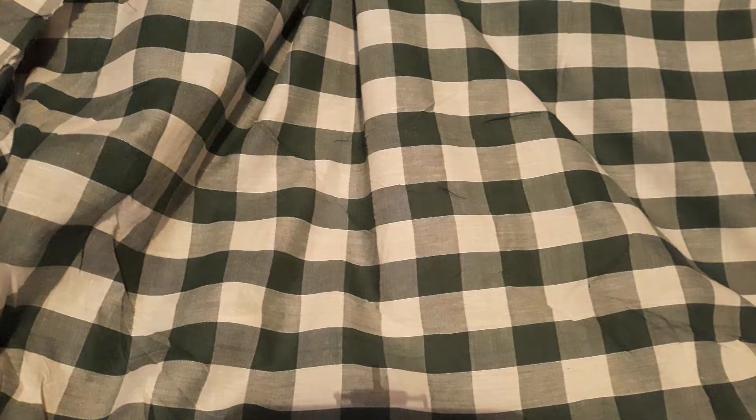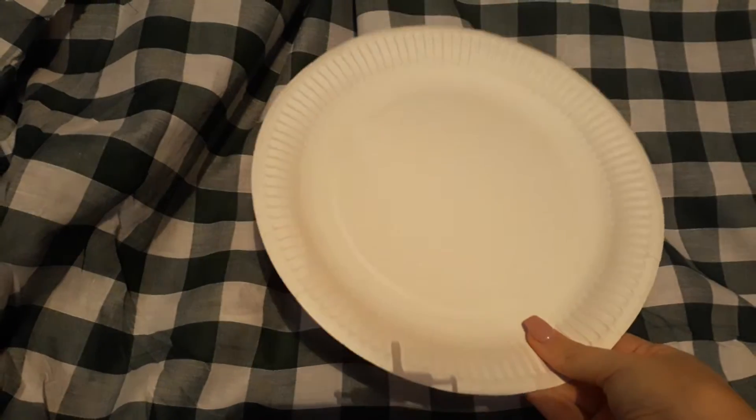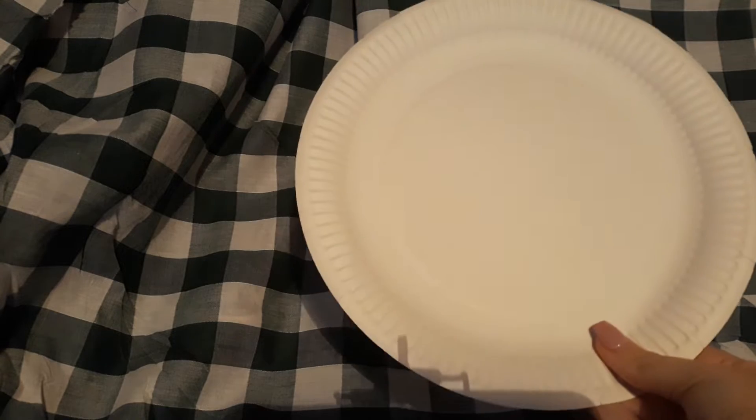What you will need is a white paper plate—they're cheap, you can buy them anywhere. Some kitchen roll that I've already cut into strips, doesn't matter what size, it depends what you're going for. Some sellotape, some scissors, double-sided tape, but I'm not going to use double-sided tape because I want to make it as cheap and easy as possible.